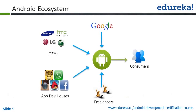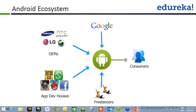Then we have consumers — the target user base. The more benefits they get from the operating system, the more consumers will be attracted to it. Then we have application development houses. When someone buys an Android device, they need a lot of applications to serve their needs. The Android Play Store has a huge number of applications, which is why Android has supremacy over other operating systems. We as Android application developers are the ones who create those applications.